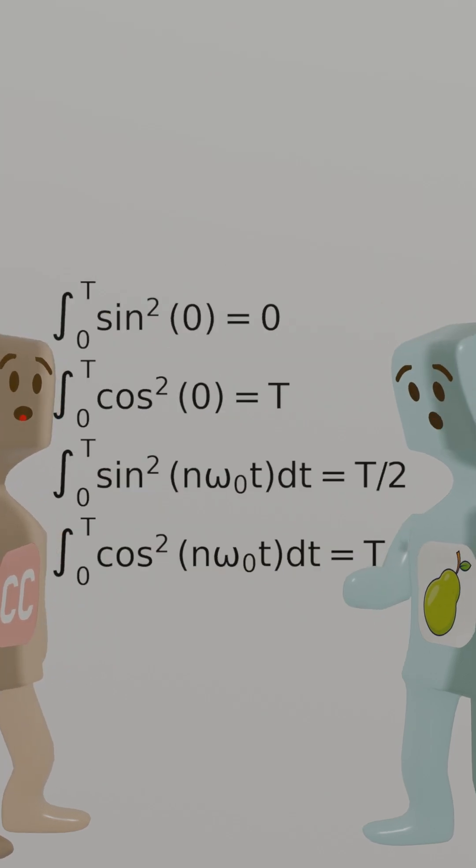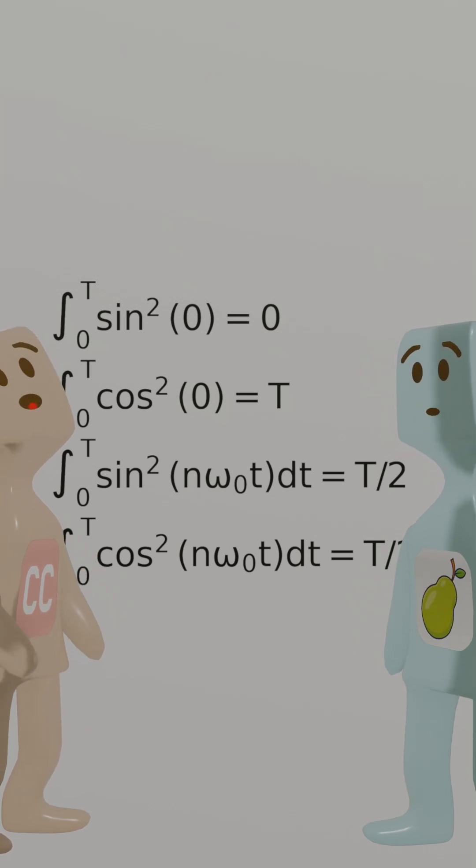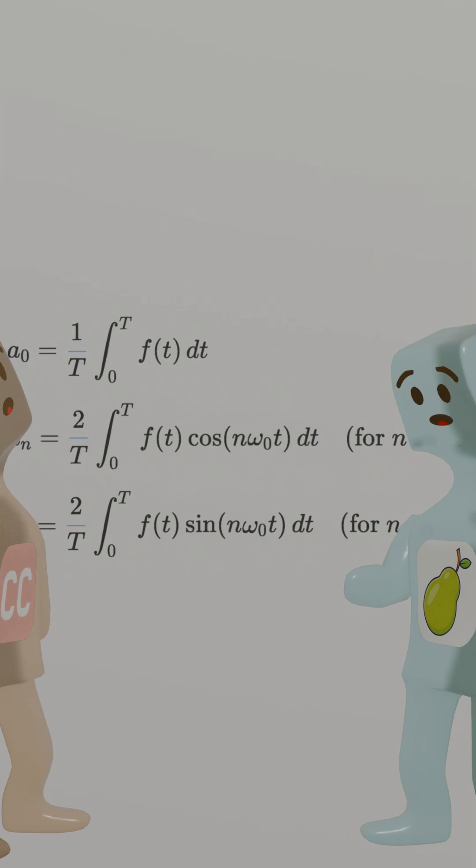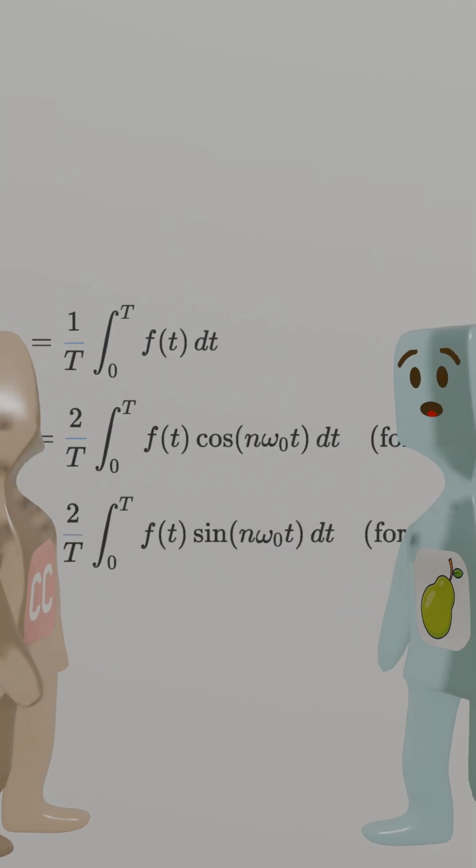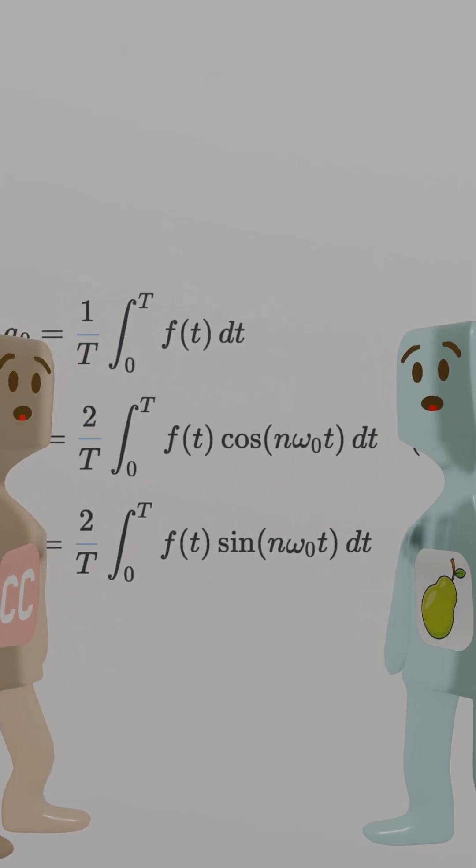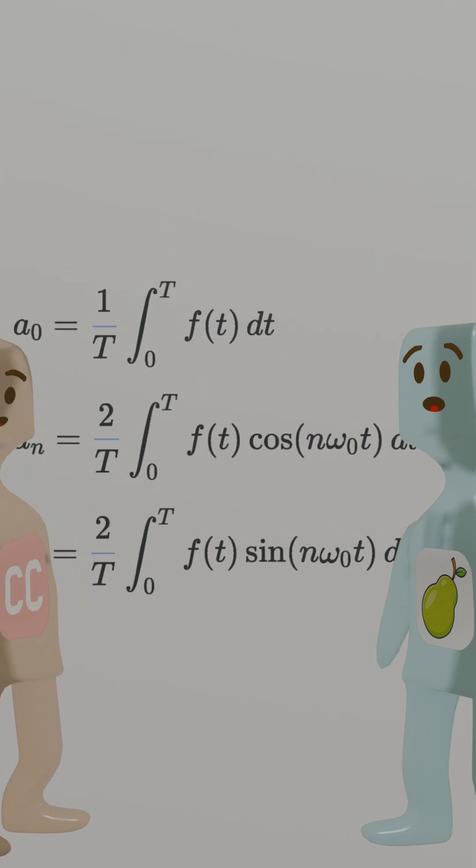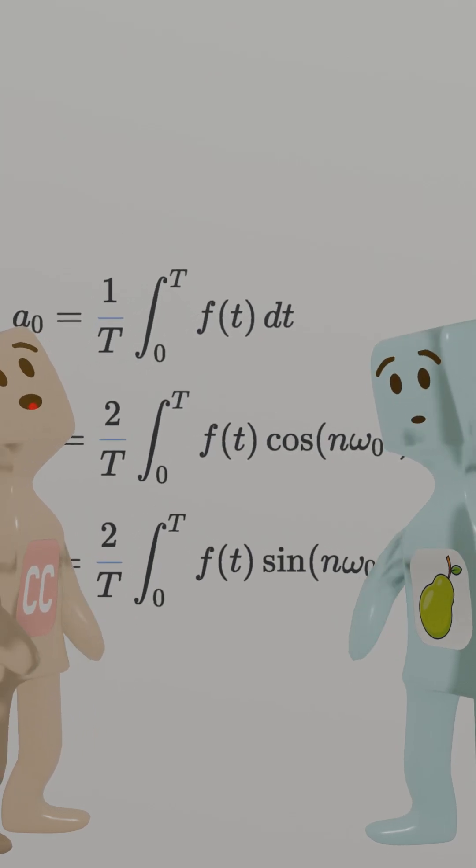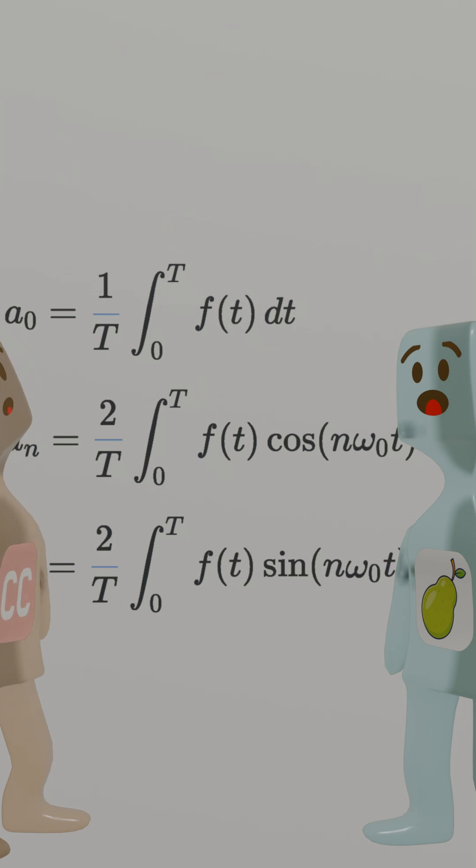Look. The standardization factors of sine and cosine, which are the integrals in the denominator, have fixed values. Rearranging the formulas will lead to the final form, the very one that strikes fear in the hearts of students in textbooks. This is the ultimate form of inner product reveals all.